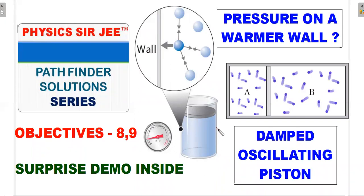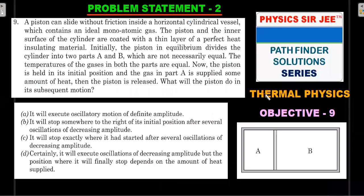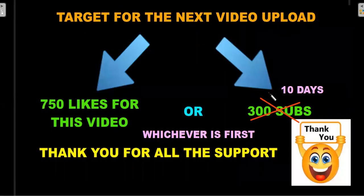Let's move forward and look at the problem statements first. Problem statement one is question number 8 — if you want to give it a try, pause the video here and attempt it for two or three minutes, then come back. Problem statement two involves the oscillating piston scenario.